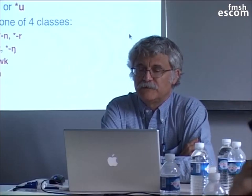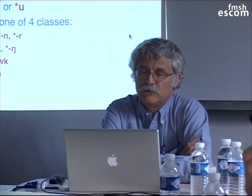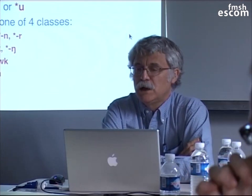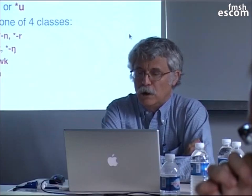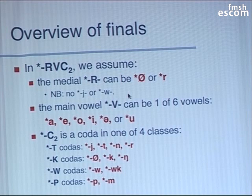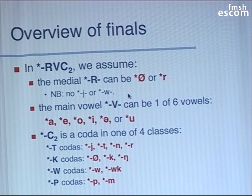So, this is a survey of the rest of the syllable as an overview. In this final, which is the RVC2, we assume that the medial R can be either 0 or R. Remember, Old Chinese has no J before the main vowel. It has no glide W. What it does have is labialized initials, and the labialization occurs only with velar and uvular initials, so you don't have things like TW. That's a crucial part of the analysis of the vowel system.